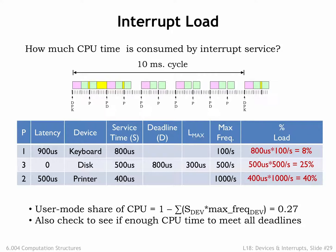Another way to get in trouble is to not have enough CPU cycles to meet each of the deadlines. We need 500 over 800, or 62.5% of the cycles, to service the disk in the time between the disk request and the disk deadline. If we assume we want to finish servicing one printer request before receiving the next, the effective printer deadline is 1,000 microseconds. In that 1,000-microsecond window we need to service one higher-priority disk request and the printer request, requiring 900 microseconds of CPU time — just barely made it! Suppose we tried setting the keyboard deadline to 2,000 microseconds. In that interval we'd need to service one disk request and two printer requests, giving a total service time of 500 + 2×400 + 800 = 2,100 microseconds, which exceeds the 2,000-microsecond window. So we can't meet the 2,000-microsecond deadline with the available CPU resources.